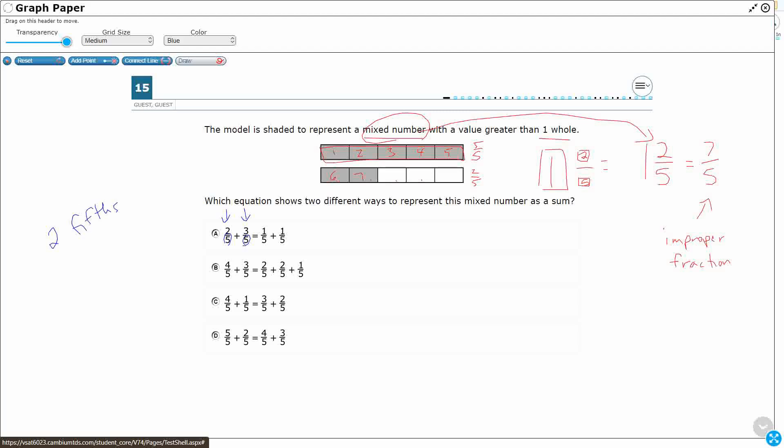And it might be easier for us to write it like this. If I have two fifths plus three fifths, think of it as writing out that as a unit. Well, obviously, that's just going to be five fifths, okay?